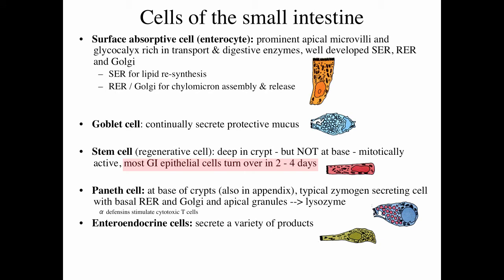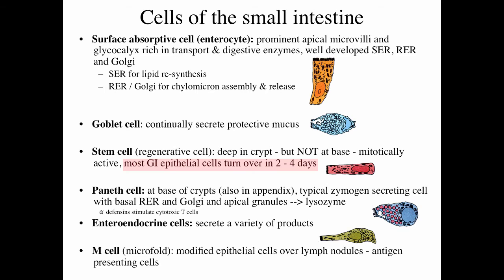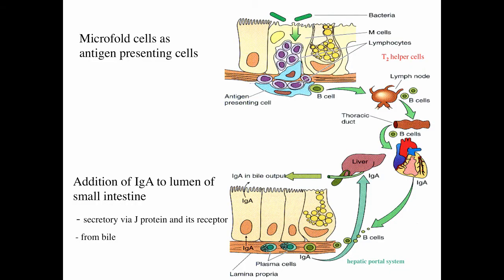Enteroendocrine cells, just like in the stomach, secrete a variety of endocrine products. A specialized cell called an M cell or microfold cell is a modified epithelial cell in the mucosa overlying abundant lymph nodules. M cells function as antigen-presenting or antigen-processing cells in the GI tract. Bacteria in the lumen may be phagocytized by M cells, brought across the surface, and presented to antigen-presenting cells in the lamina propria, which stimulate T helper cells to activate B cells to produce antibodies — important for immunologic protection in the GI tract.